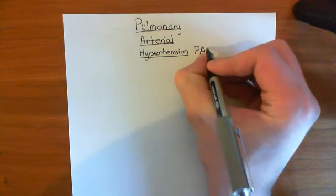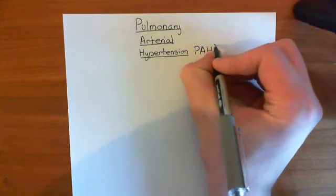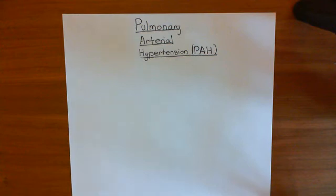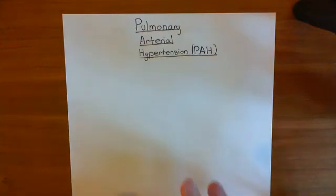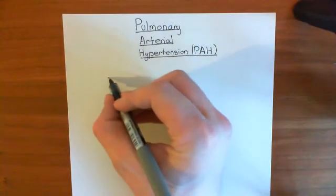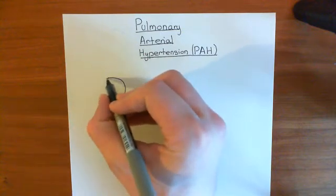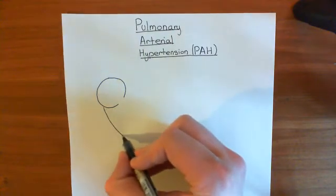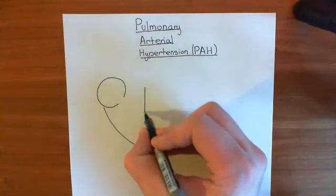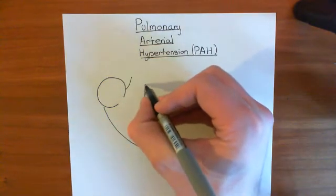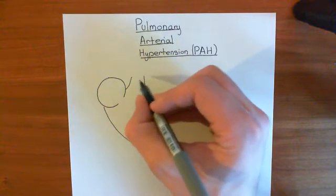Pulmonary arterial hypertension is usually abbreviated to PAH. So let's have a look at how pulmonary arterial hypertension comes to be. Let's draw a picture of the heart — the physiologist's picture, not the anatomist's picture. So here is the right atrium, and here is the right ventricle, with the pulmonary trunk coming out of it.